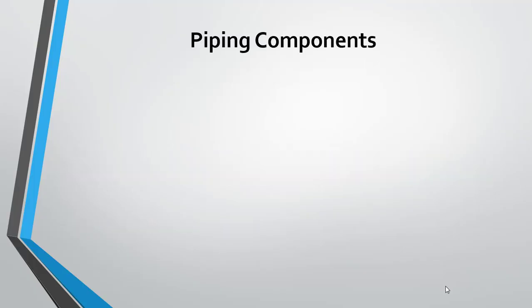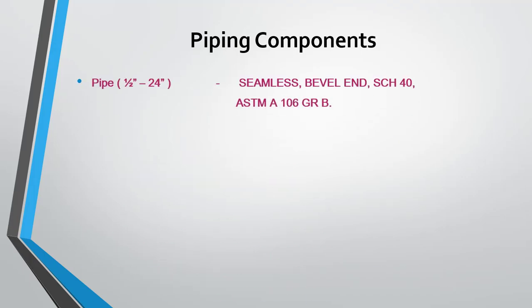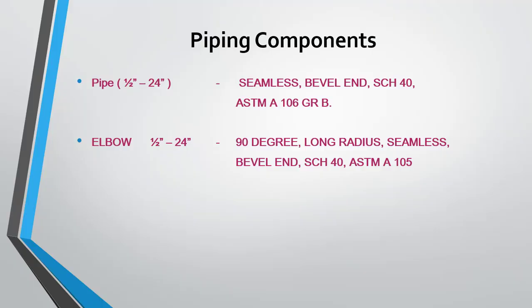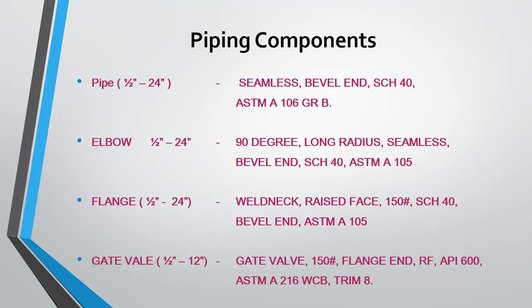The fourth area is piping components. A piping class has a list of piping materials which indicates the size, the material standards, and the material description of the piping components. For example, pipes are represented with sizes from half an inch to 24 inch, with a description of seamless, bevel-end, and schedule 40. Schedule 40 indicates the thickness of the pipe, and the material standard is ASTM A106 Grade B. This type of information is given not only for pipes, but also for elbows, flanges, valves, gaskets, and bolts.